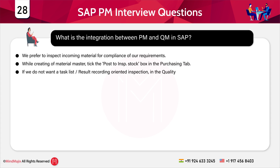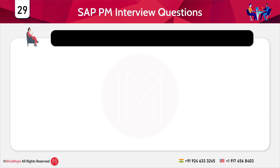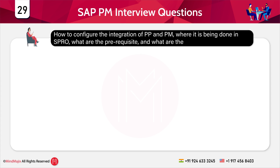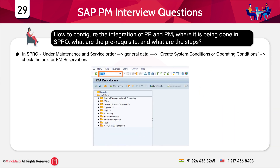What is the integration between PM and QM in SAP? For spare parts purchase, while creating the material master, tick the 'Post to Inspection Stock' box in the purchasing tab. If you do not want a task list result recording-oriented inspection, choose appropriate selections in the quality tab. When the spare is received it will go to quality stock. For PP and PM integration in SPRO: under maintenance and service orders, generate data and create system or operating conditions. Check the box for PM reservation in the equipment master under the locations tab, mention the PP work center, and in the order header data give the system condition as 0 (machine not in operation).